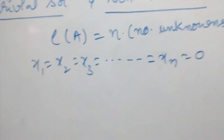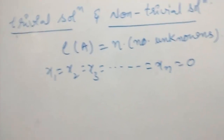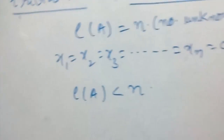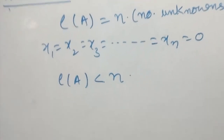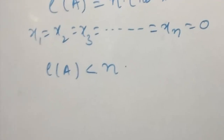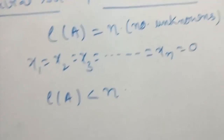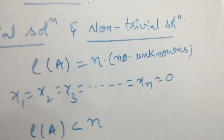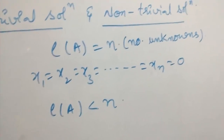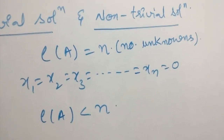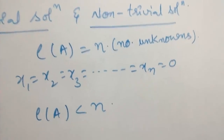When all the values of the unknowns are equal to 0, it is called a trivial solution. Non-trivial solution means when the rank of A is less than the number of unknowns — in that case we are going to have infinitely many solutions. When we reduce the given matrix into echelon form, if the rank equals the number of unknowns, we get a trivial solution; if it is less, we get a non-trivial solution with infinitely many solutions.